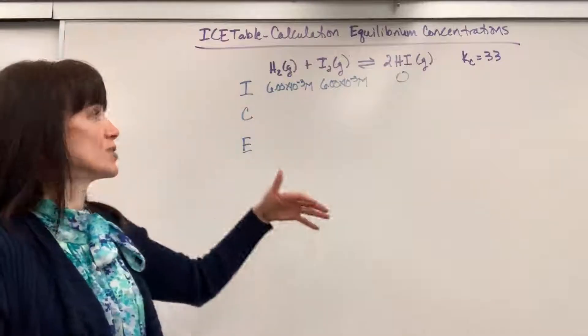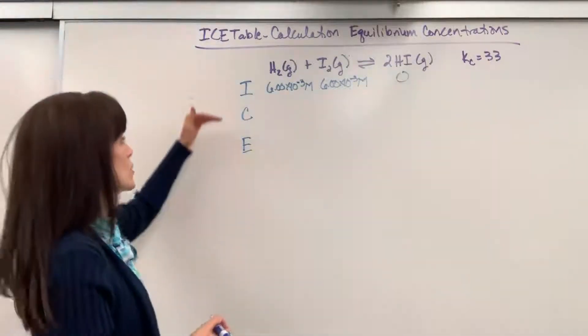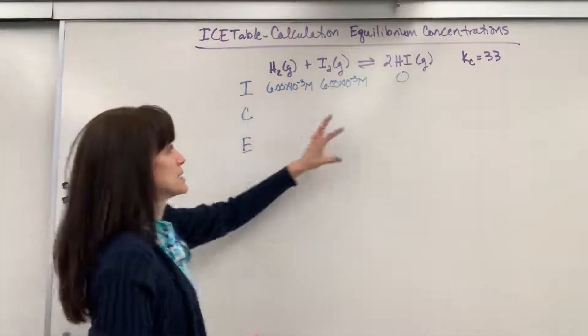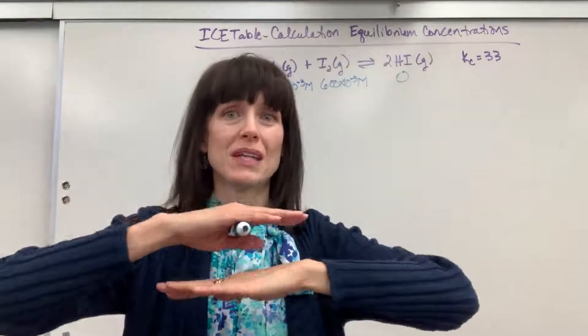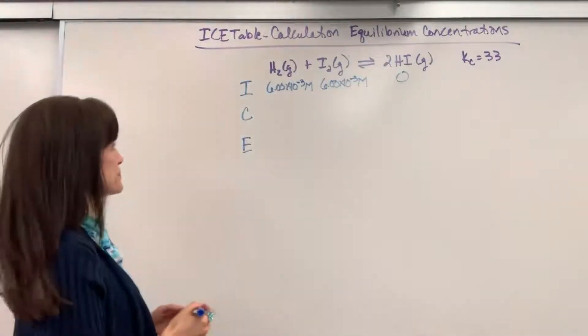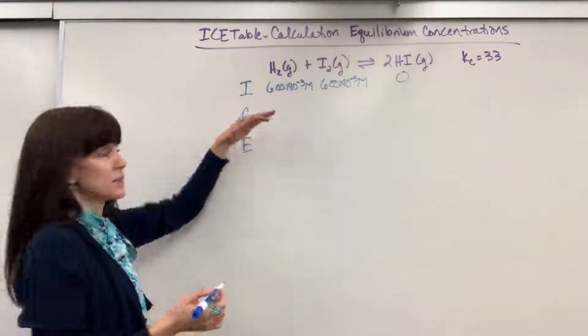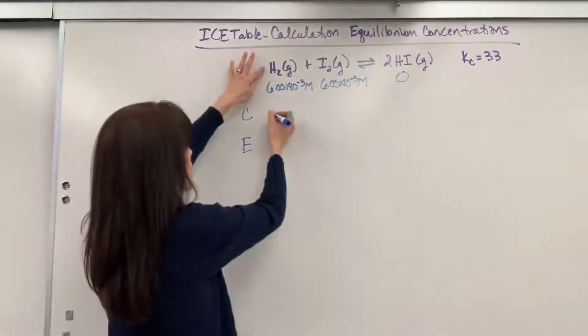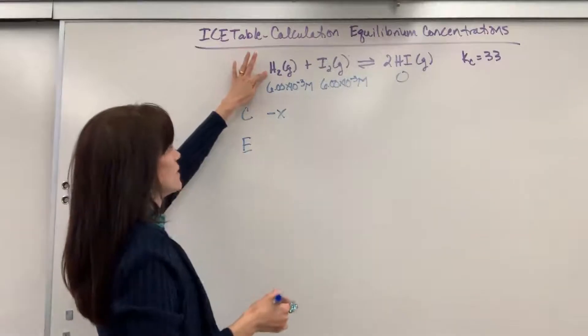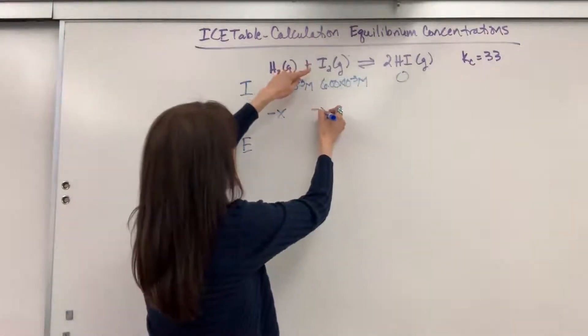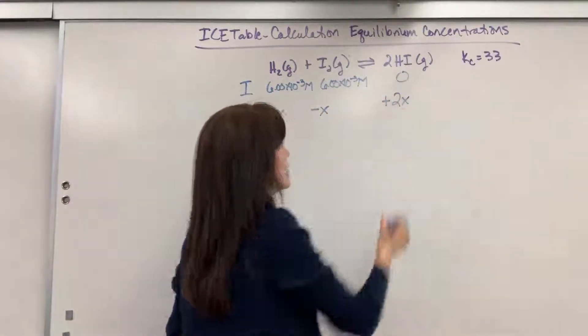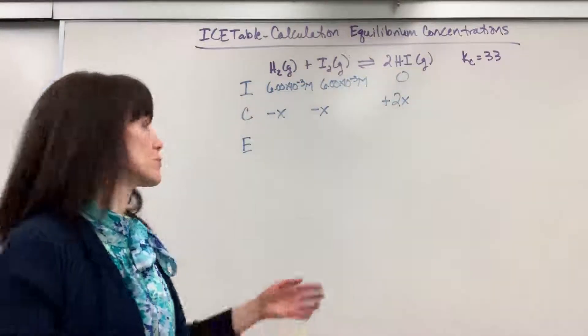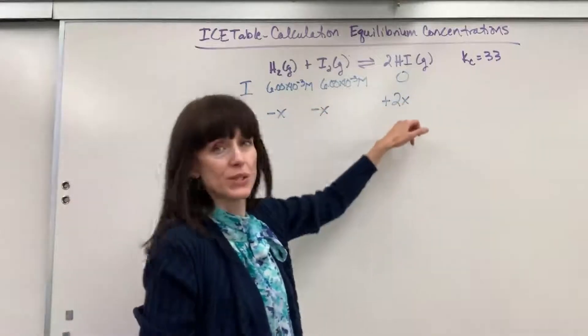that's just what we begin with. We have no products to begin with, so that's zero. Now we're going to do change. So with change, we're going to lose reactants and gain products until we come into that perfect equal rate. That's equilibrium. So the amount that ultimately I'm going to lose is going to be a ratio of 1 mole of the